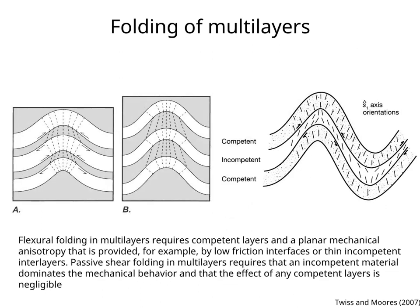Flexural folding in multi-layers requires competent layers in a planar mechanical anisotropy that is provided, for example, by low-friction interfaces or thin incompetent interlayers. This is shown in figure A.